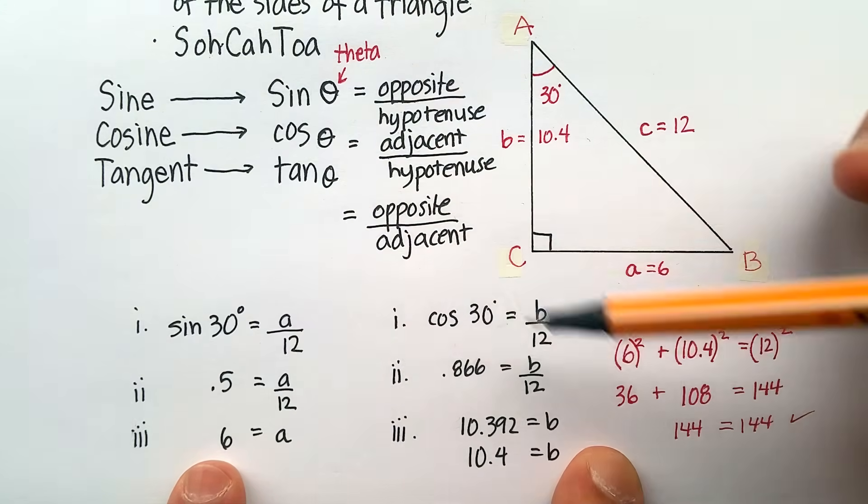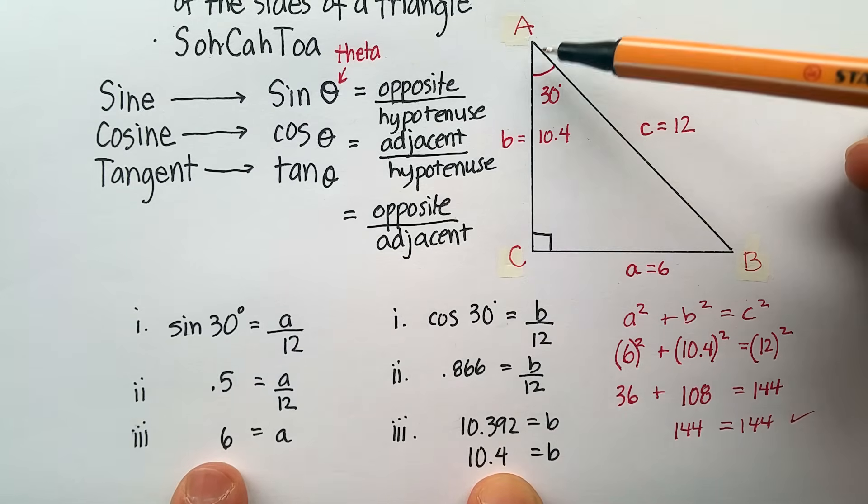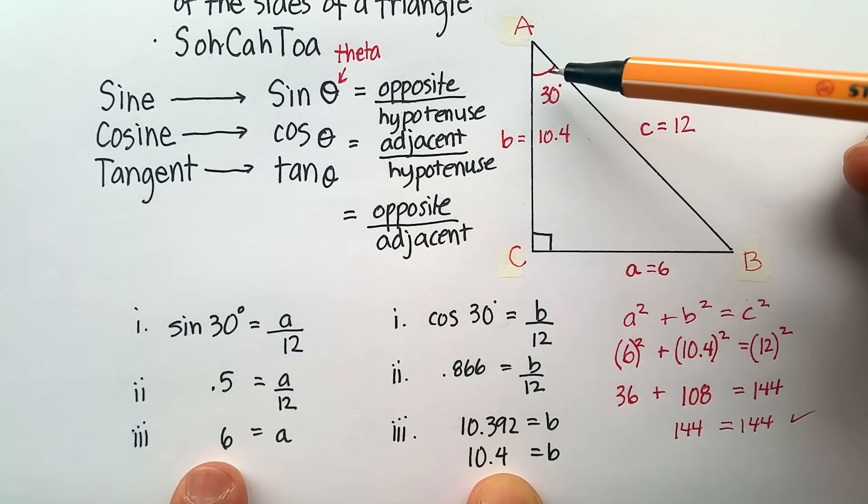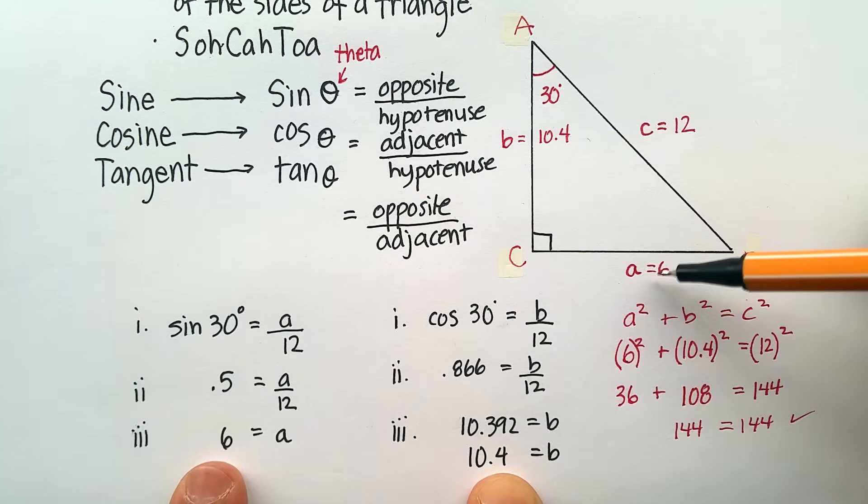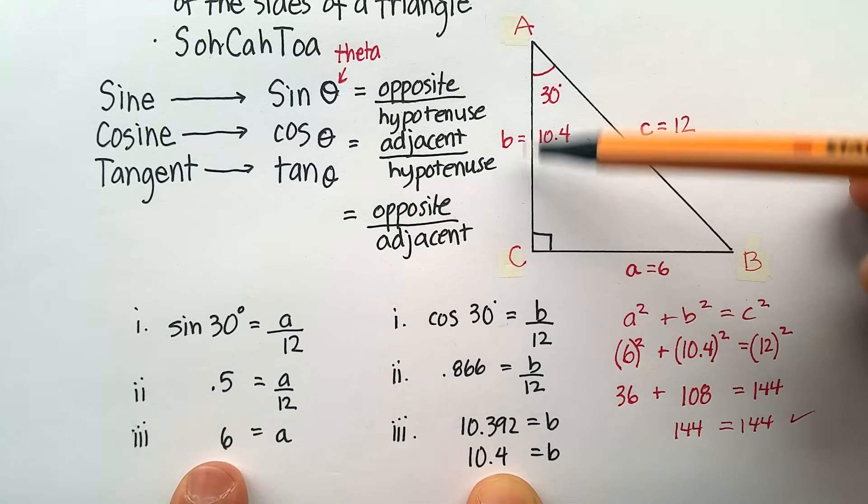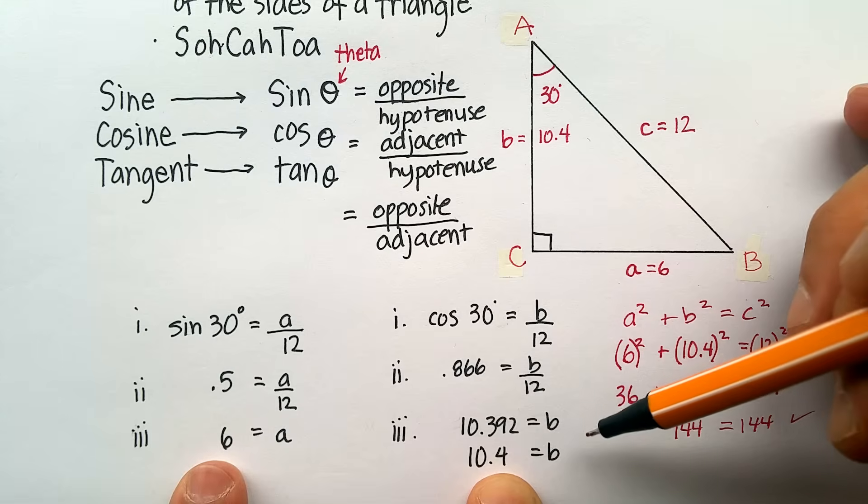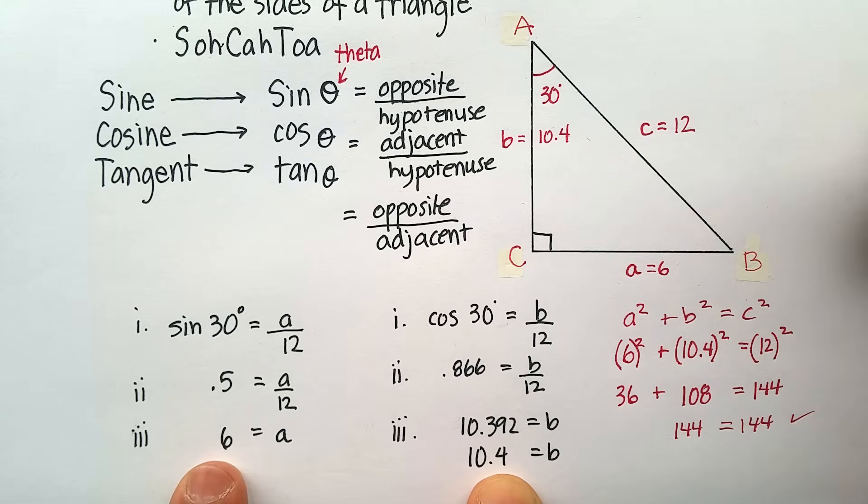And again, you could also use tangent to find B. I could have used the tangent of 30 was the opposite over the adjacent, right? And I would have gotten a different ratio, but it would have actually ended up working. I hope this was helpful to you. All right.